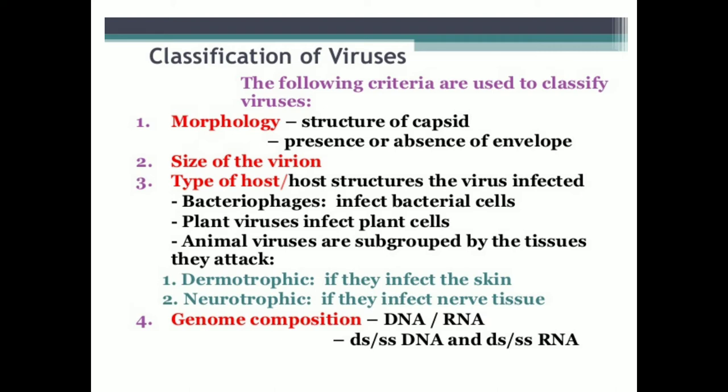Virion means the infectious virus particle — that is, a single virus particle is called a virion. On the basis of the size of that virus particle, different viruses have different sizes. It ranges from 20 nanometers to 2000 nanometers. So on the basis of size of the virus particle, we classify the virus.